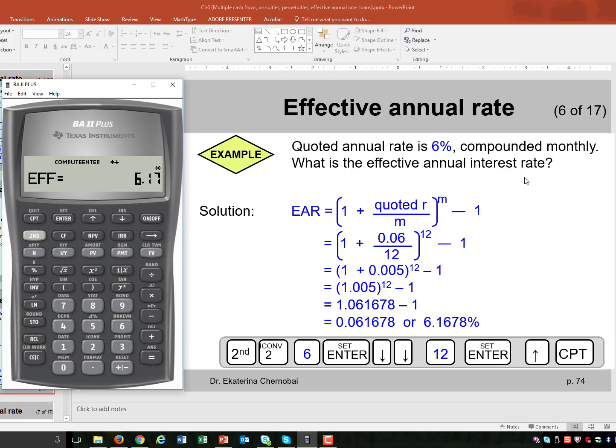Do you want compounding to be more frequent or less frequent? The answer should be more frequent. Because you want to earn as high interest rate as possible.